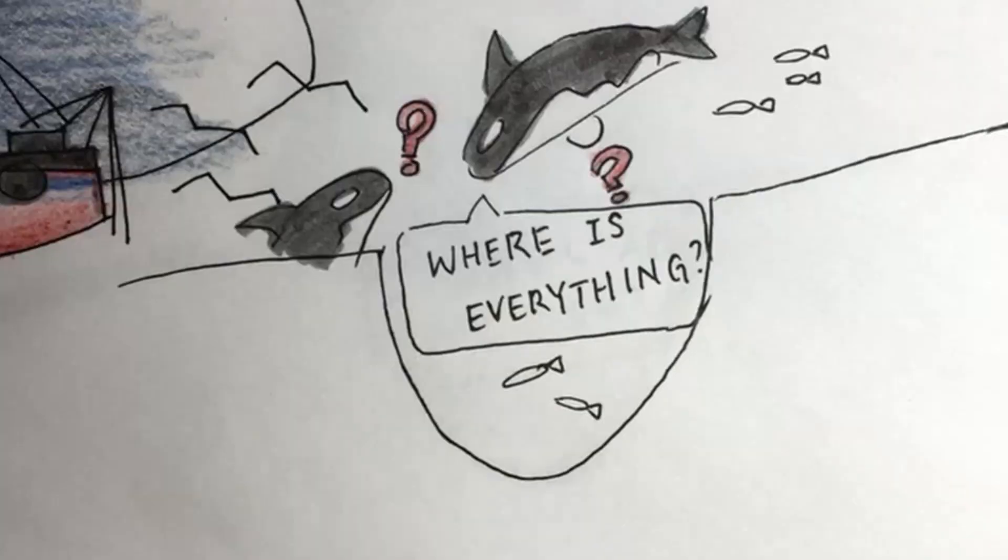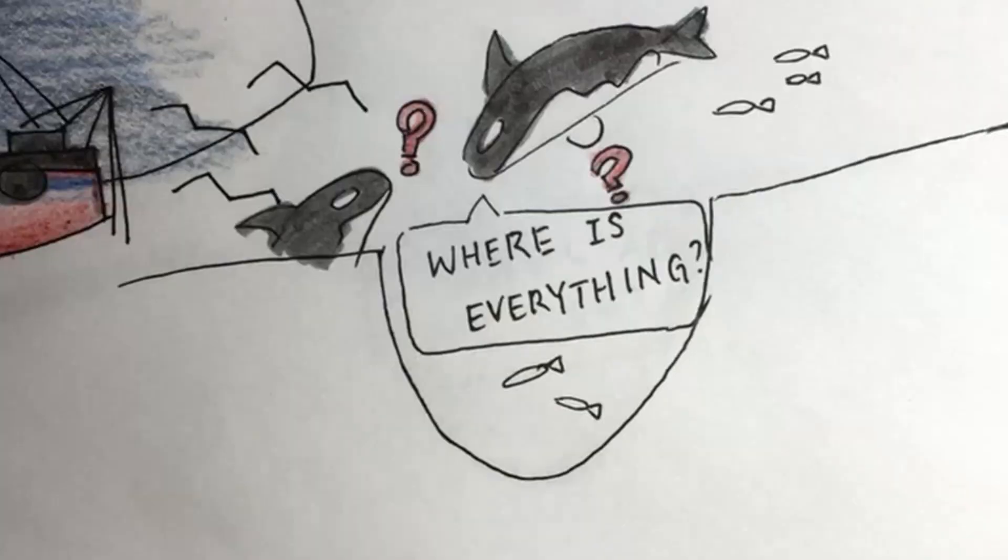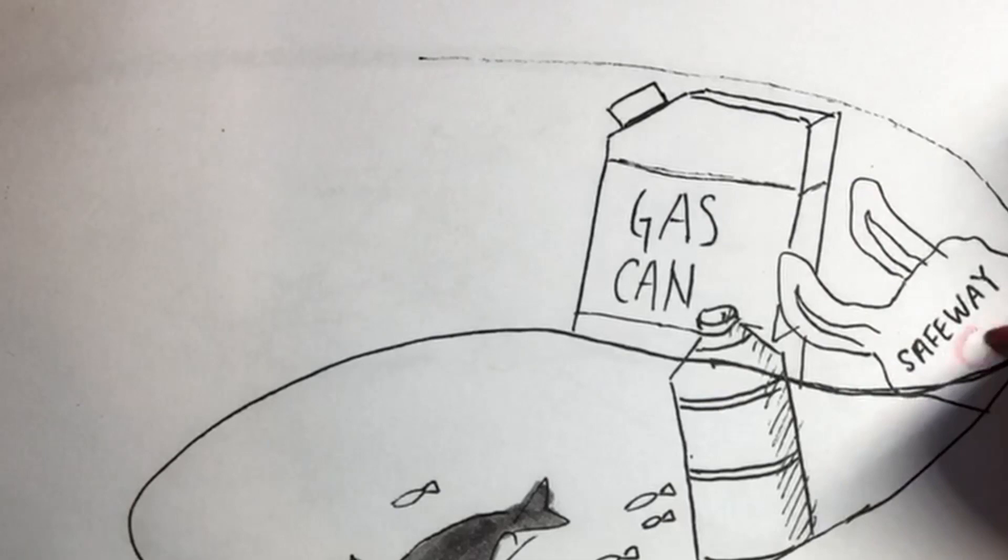Thirdly, they live in oceans filled with chemicals and garbage that they mistake for food. These cause the orcas' bodies to develop problems, preventing baby orcas from being born.